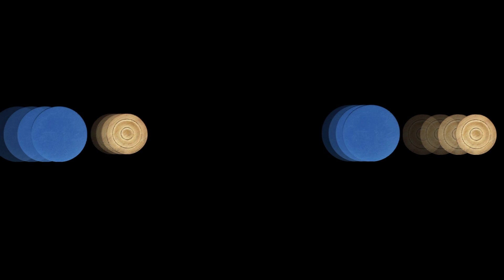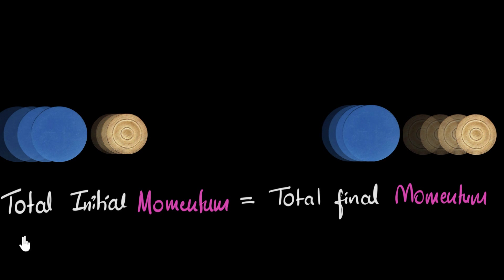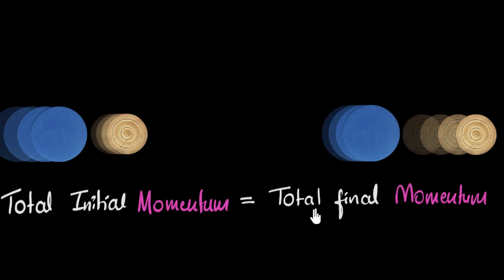What we mean by that is, if you calculate the total initial momentum of these two coins before the collision, that will equal the total momentum after the collision. The goal of this video is to mathematically prove that statement. If you're not familiar with this concept, we've talked about it with examples in a previous video called Conservation of Momentum — it would be a great idea to watch that first and then come back. Anyway, if you're ready, let's go ahead and prove this.